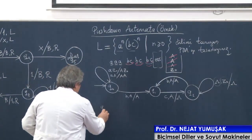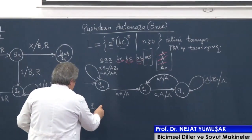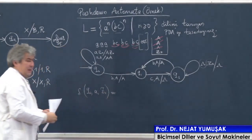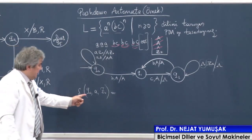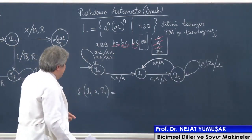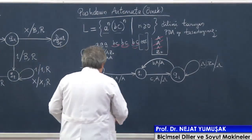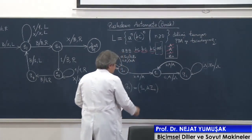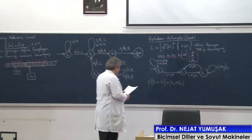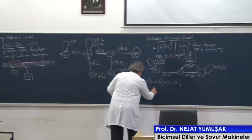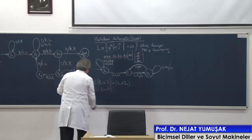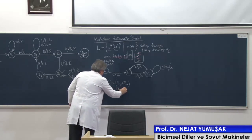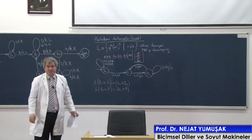Tabii ki buradaki durumların hepsini yazalım. Q0'dayım, şeritten A okudum, yığıtta Z0 var. Q0'da kal, ama yığıta bir büyük A simgesini ekle. Yığıtta A Z0 oldu. Bir de ne olabilir? Q0'dayım, A okudum, yığıtta A var. Gene Q0'da kal — okuduğum bu küçük A simgesine karşılık yığıta bir A ekle diyoruz.